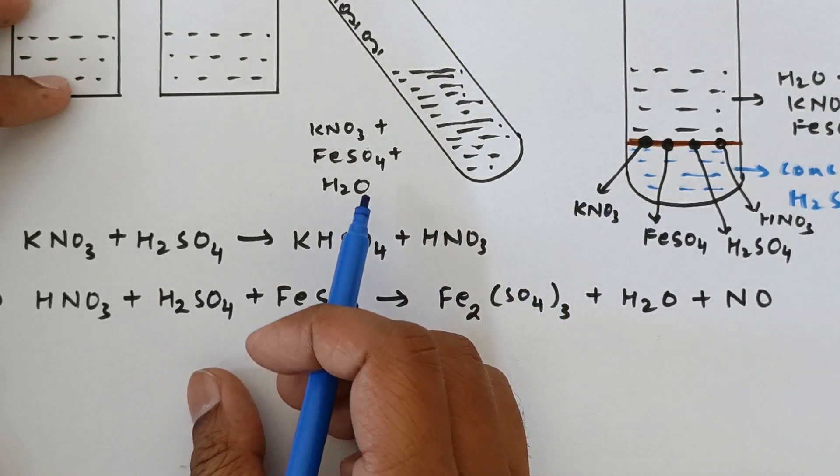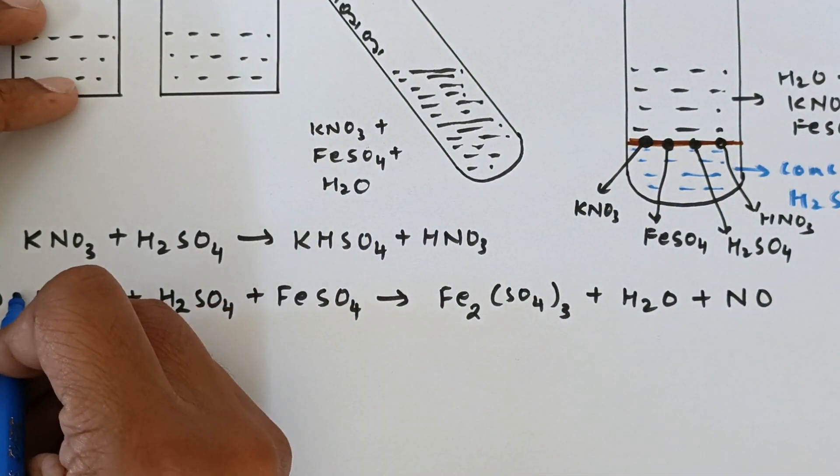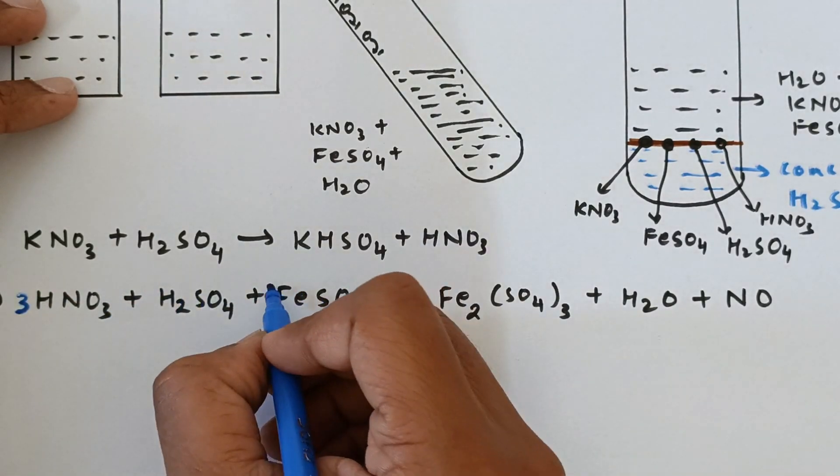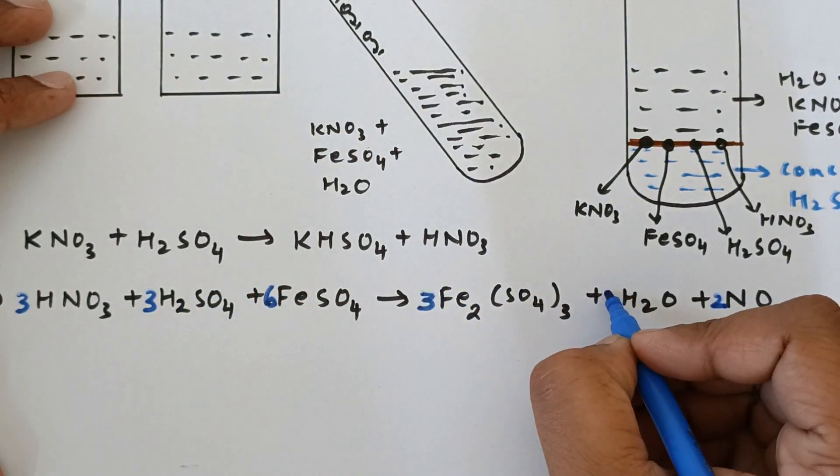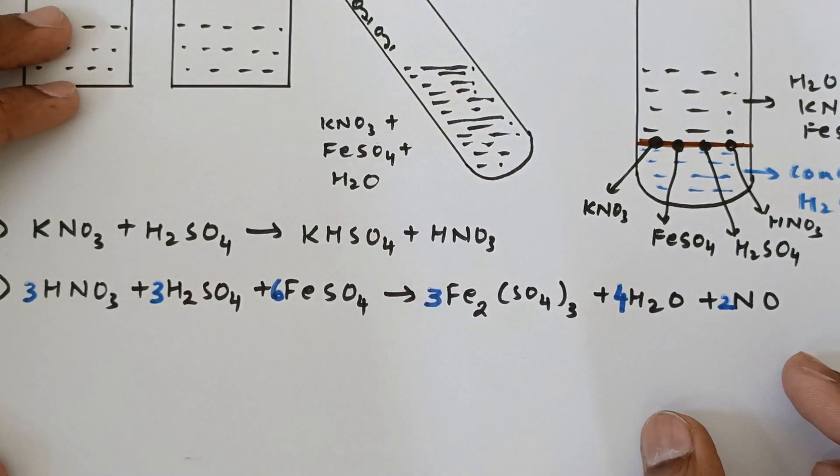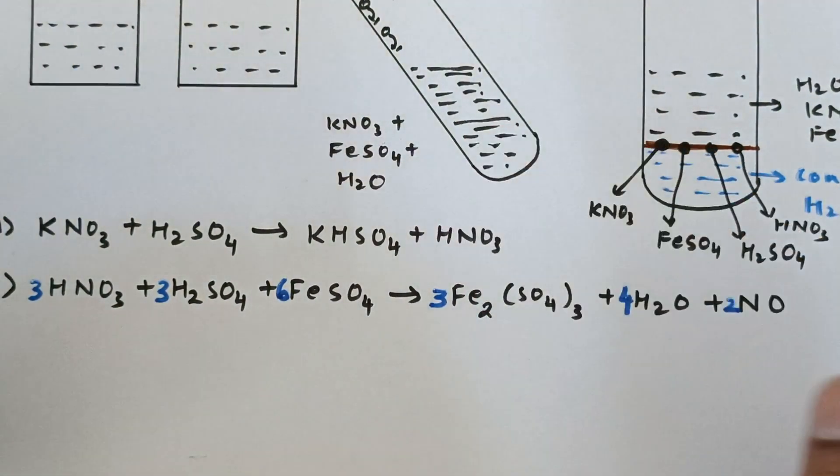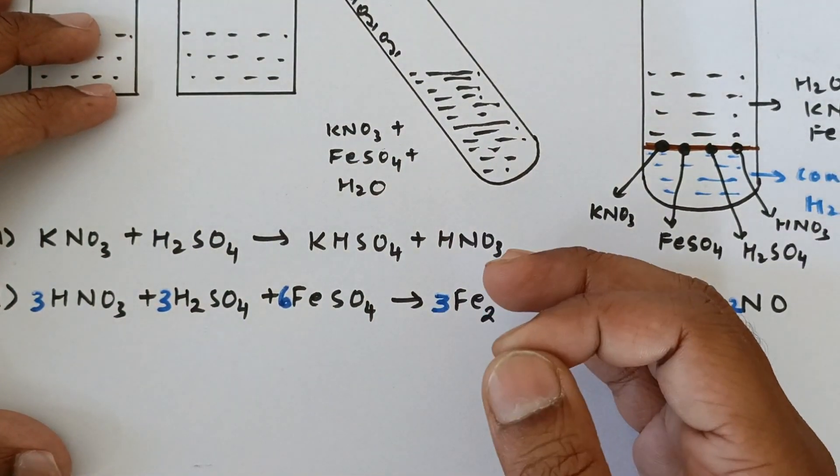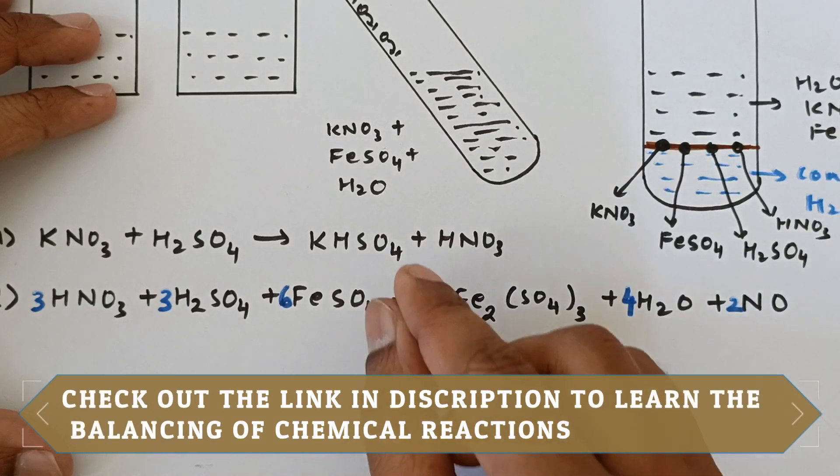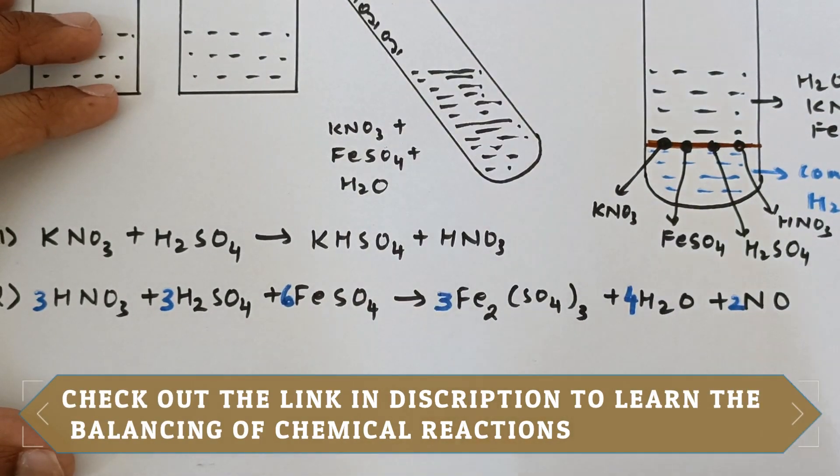So let me write the balanced chemical reaction. So this is the balanced chemical equation. You may just try it out, and if you want to really learn the balancing of chemical equations, there are a few videos which will be helping you out. The link is given in the description. Please check them out.